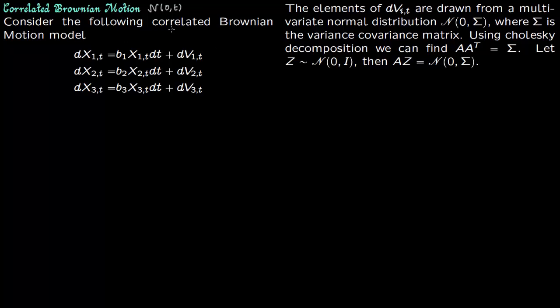So say you have the following correlated Brownian motion model. Say there are three commodities you are worried about. One is steel, second is wrought iron, and third is cast iron. So these three commodities have correlated prices. So say that this is the price of steel, this is the price of wrought iron, and this is the price of cast iron.